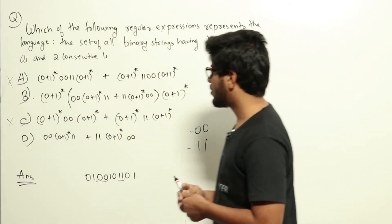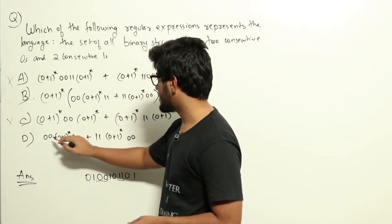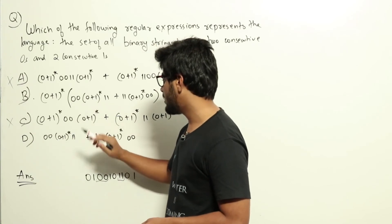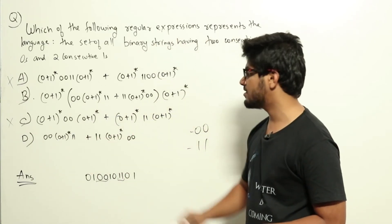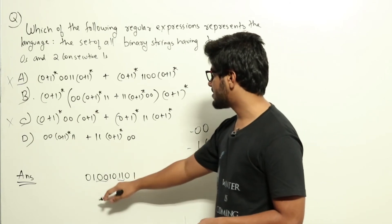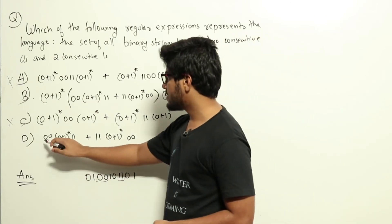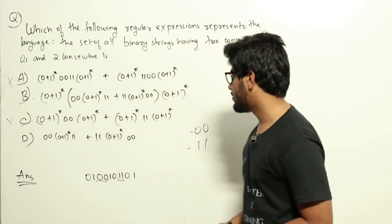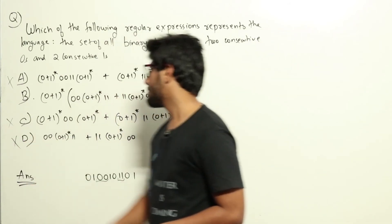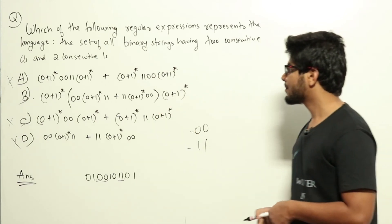Option D generates strings starting with 00 and ending with 11, or starting with 11 and ending with 00. This is also wrong — our sample string starts with 01, but option D can only generate strings starting with either 00 or 11. So option D is also wrong.